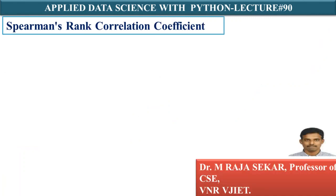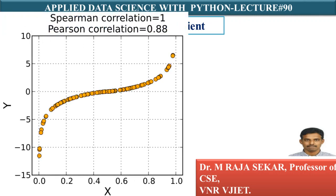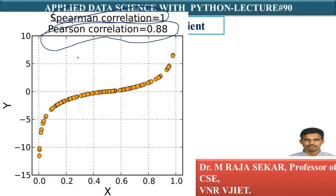When you have a slightly non-linear relationship — not like sine curves, but when you have a dataset like this one (I collected this graph from Wikipedia) — it's not perfectly linear, it has a curved nature, but it is a monotonically non-decreasing relationship. For this particular dataset, if I calculate, my Spearman Rank Correlation Coefficient is 1, whereas my Pearson Correlation Coefficient is 0.88.